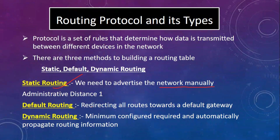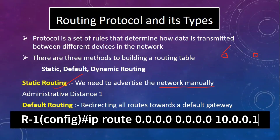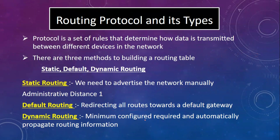Static routing is very custom — the network administrator has to configure it, and with 300 devices that is very demanding. For default route, we can redirect all routes toward the default gateway. In a router, we configure IP address 0.0.0.0, subnet mask 0.0.0.0, then the gateway — for example, 10.0.1.1 — to configure routing in this router.